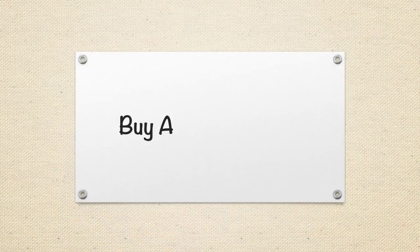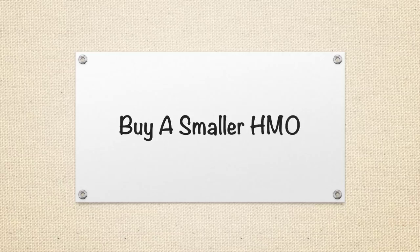You could maybe buy a smaller HMO, say a four to six bed type place. Obviously, where you're wanting to invest will have a huge impact on what you can actually afford, but in some areas, you can get a huge lump of a property and make a really good cash flow if you're starting off with an investment of 50,000 pounds.